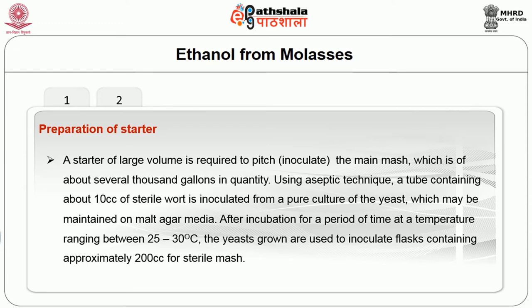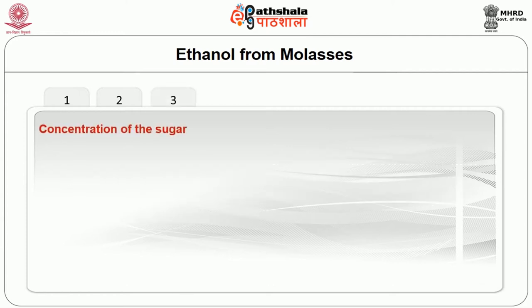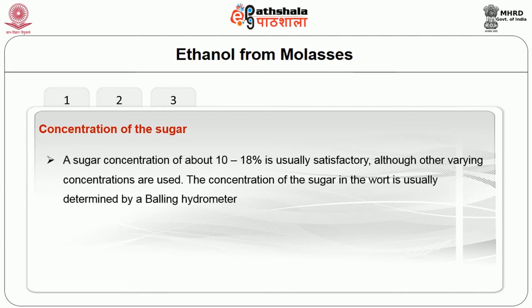After incubation at a temperature ranging between 25 to 30 degrees centigrade, the yeast grown are used to inoculate flasks containing approximately 200 cc of sterile mash. This is followed by an incubation period after which the culture is scaled into a sterile mash of about 4-litre capacity. The subsequent inoculation is done in a semi-plant scale size of 10 to 40 gallons. This fermented mash, the starter, is pumped into the main mash, which constitutes pitching. The third step is the concentration of sugar: a sugar concentration of about 10 to 18 percent is usually satisfactory.